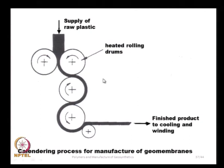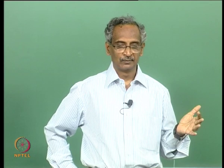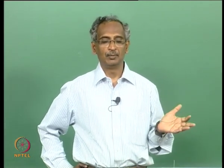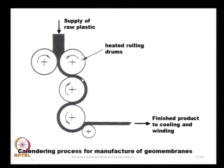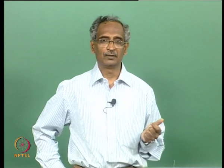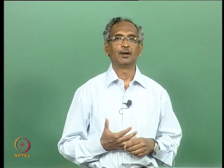Geomembranes are manufactured by taking a sheet of polymeric material — either HDPE or PVC — and passing it through a series of hot rolling drums rotating against each other. The raw sheet is stretched through several stages to produce the finished product, which is then cooled and wound. Geotextiles and geomembranes typically come in widths of 3–5 meters and lengths up to 100 meters.